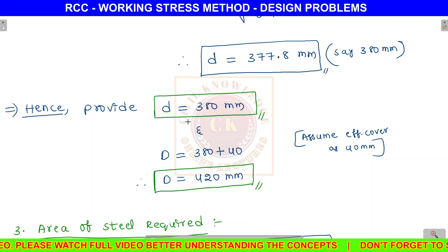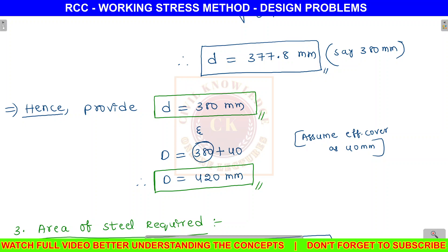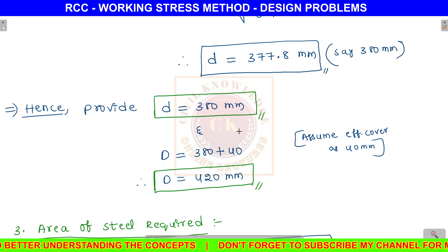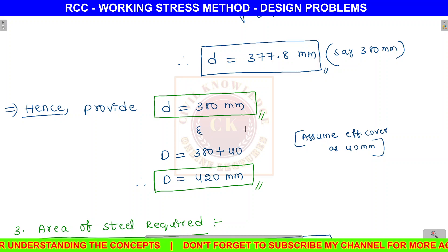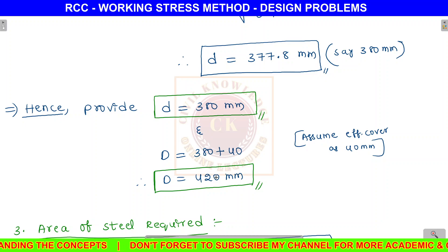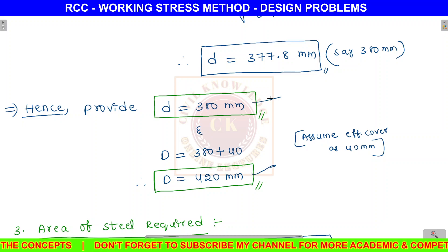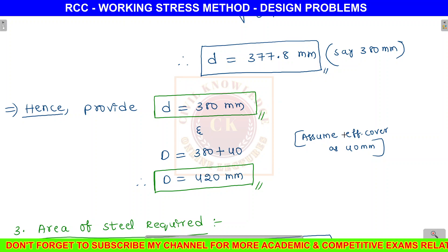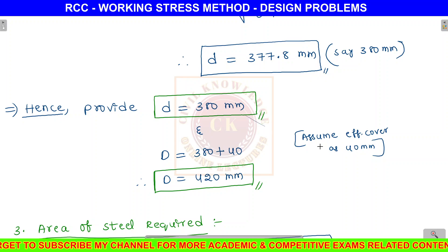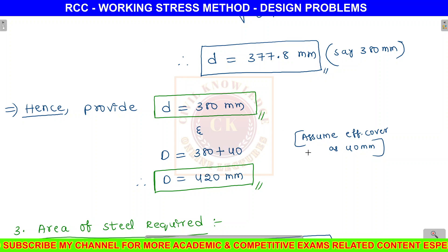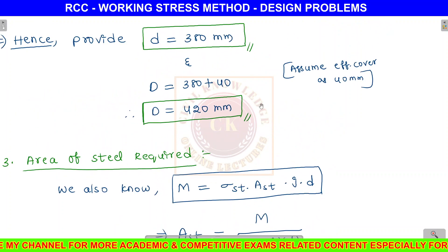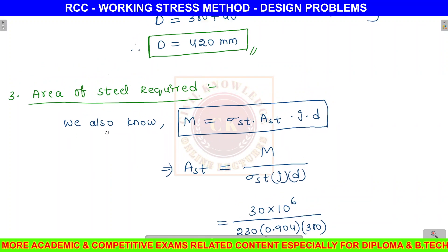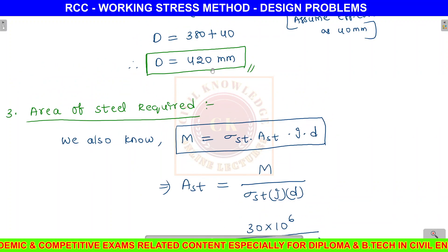The overall depth D equals effective depth plus effective cover. Assuming effective cover as 40 mm, overall depth D equals 380 plus 40 equals 420 mm. So the beam dimensions are width b equals 230 mm, effective depth d equals 380 mm, and overall depth D equals 420 mm.